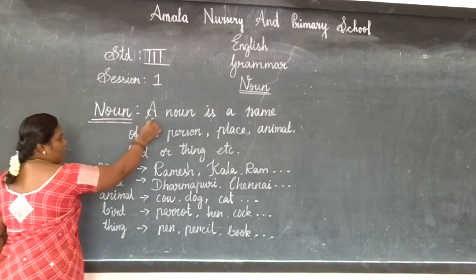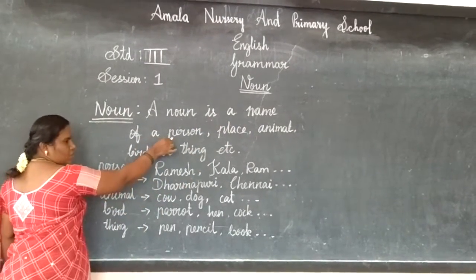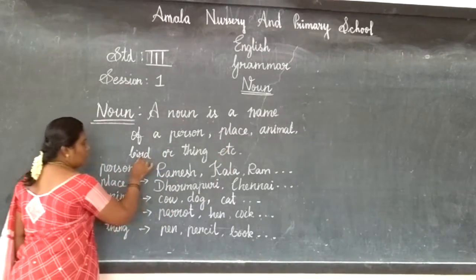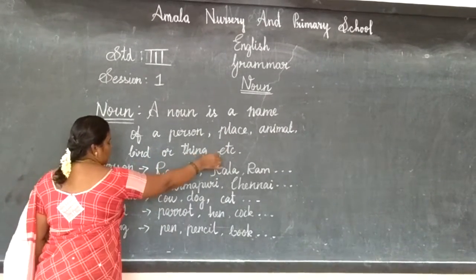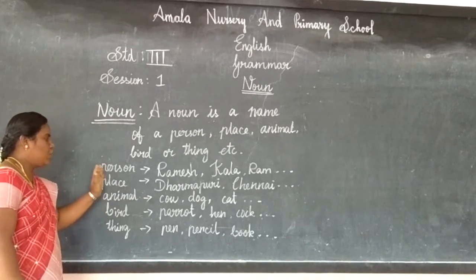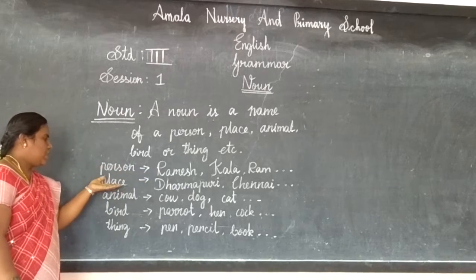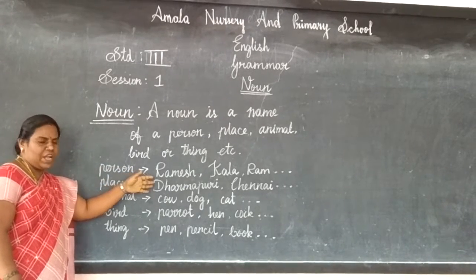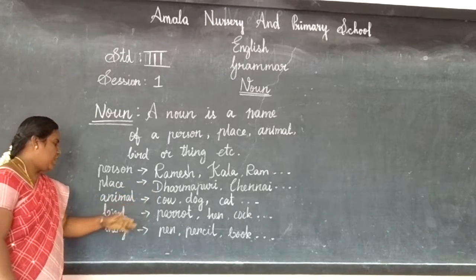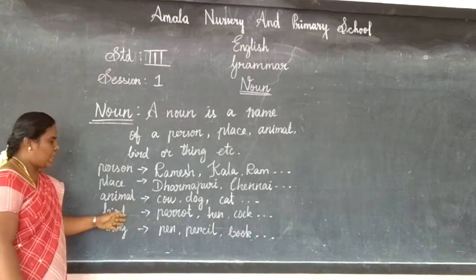What is a noun? A noun is the name of a person, place, animal, bird, or thing etc. In the same way you have to practice. Write your name, then your street name for place. You know which animal names. Just write them. Then bird name and things. Just practice like this.